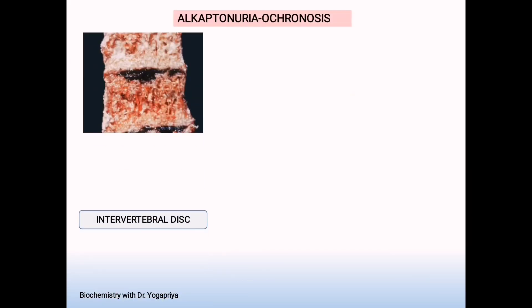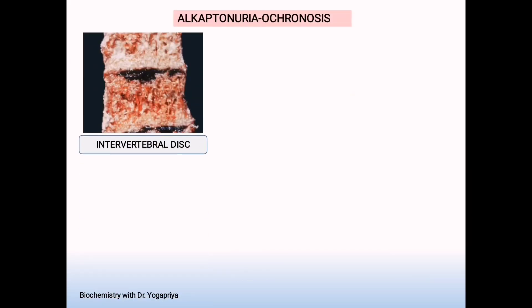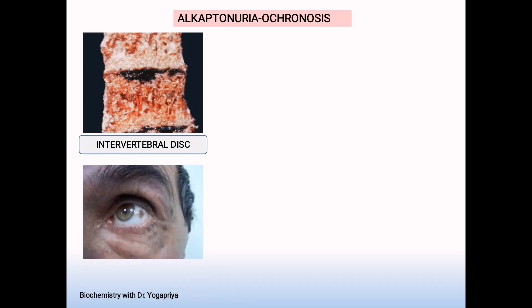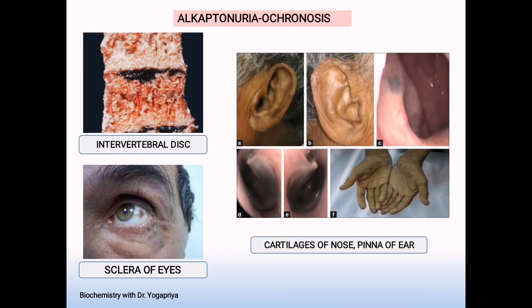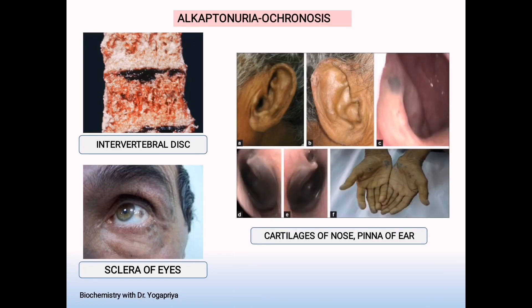This is all about ochronosis. Here you can see alkapton body deposition in the intervertebral disc and in the sclera of the eyes. Next, deposition is seen in the pinna of the ear and also the cartilage of the nose.